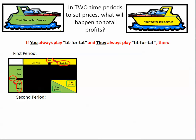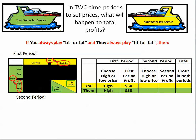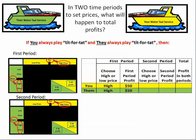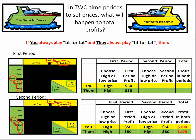What if you both play tit-for-tat? The starting point is both charging the high price — you each get $50 in the first period. In the second period, you do what they did last time (high), so you go high again. They do what you did last time (high), so they go high again. Lo and behold, you both end up at high again. Over both periods, you each made $50 + $50 = $100 total. Both playing tit-for-tat produces the best mutual outcome.